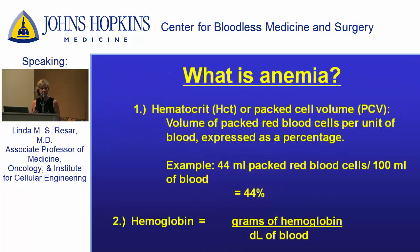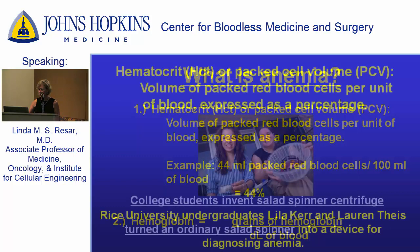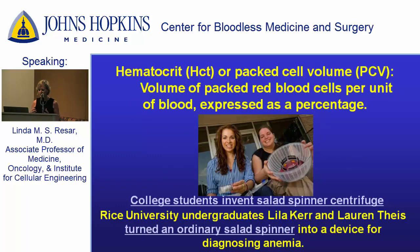How do we measure anemia? Besides looking under the microscope, we actually measure it as a percent — we look at the percentage of red cells to the total blood. We also can measure the amount of hemoglobin protein using specialized machines. To help you conceptualize this, I want to share a really amazing and ingenious discovery by two young women from Rice College. They actually took a salad shaker and developed a way to diagnose anemia in developing countries where there's no refrigeration or electricity. I've worked in West Africa, so I can appreciate the limited resources that many countries have.